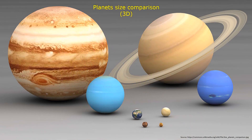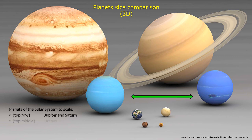Planet size comparison — 3D planets of the solar system to scale. Top row: Jupiter and Saturn. Top middle: Uranus and Neptune.